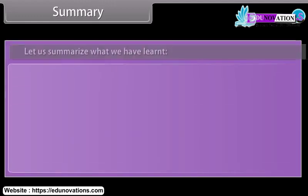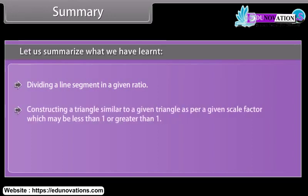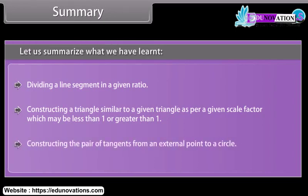Let us summarize what we have learned: dividing a line segment in a given ratio; constructing a triangle similar to a given triangle as per a given scale factor, which may be less than 1 or greater than 1; and constructing the pair of tangents from an external point to a circle.